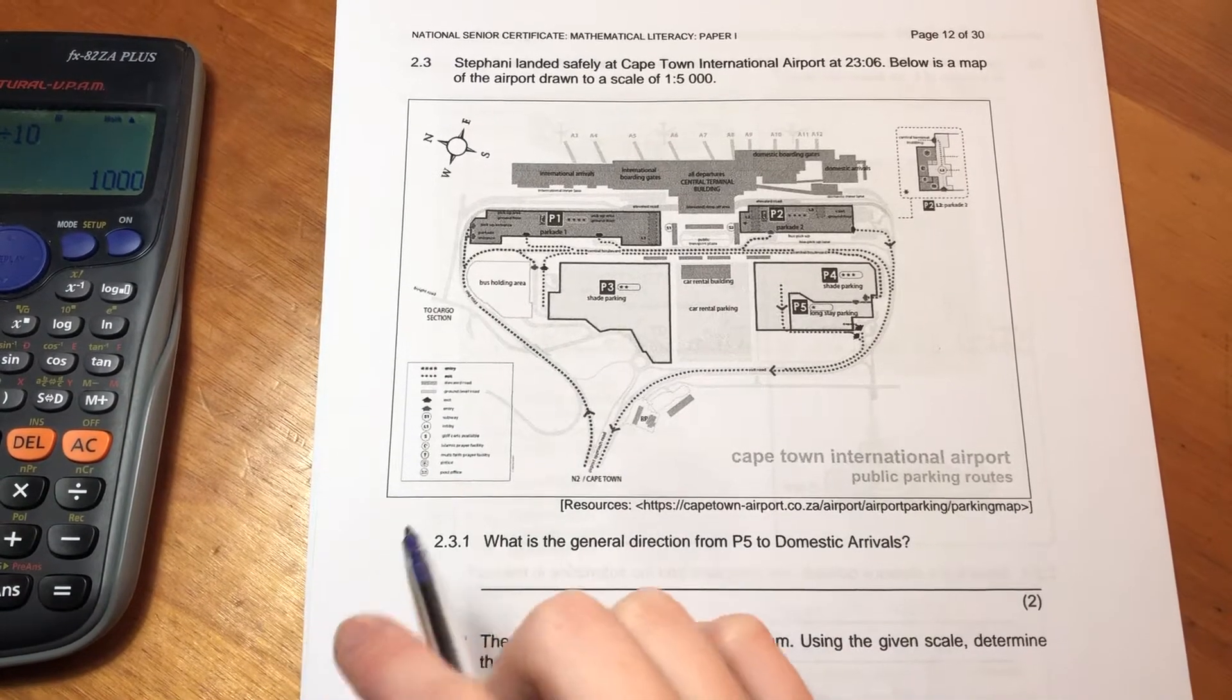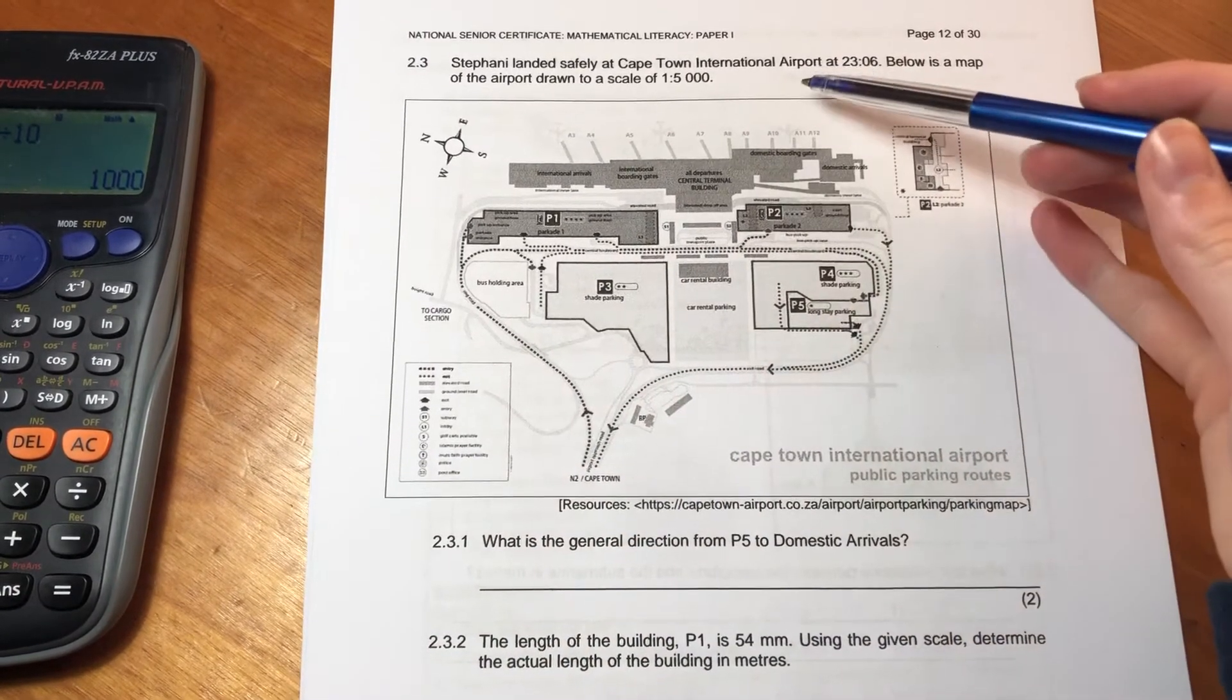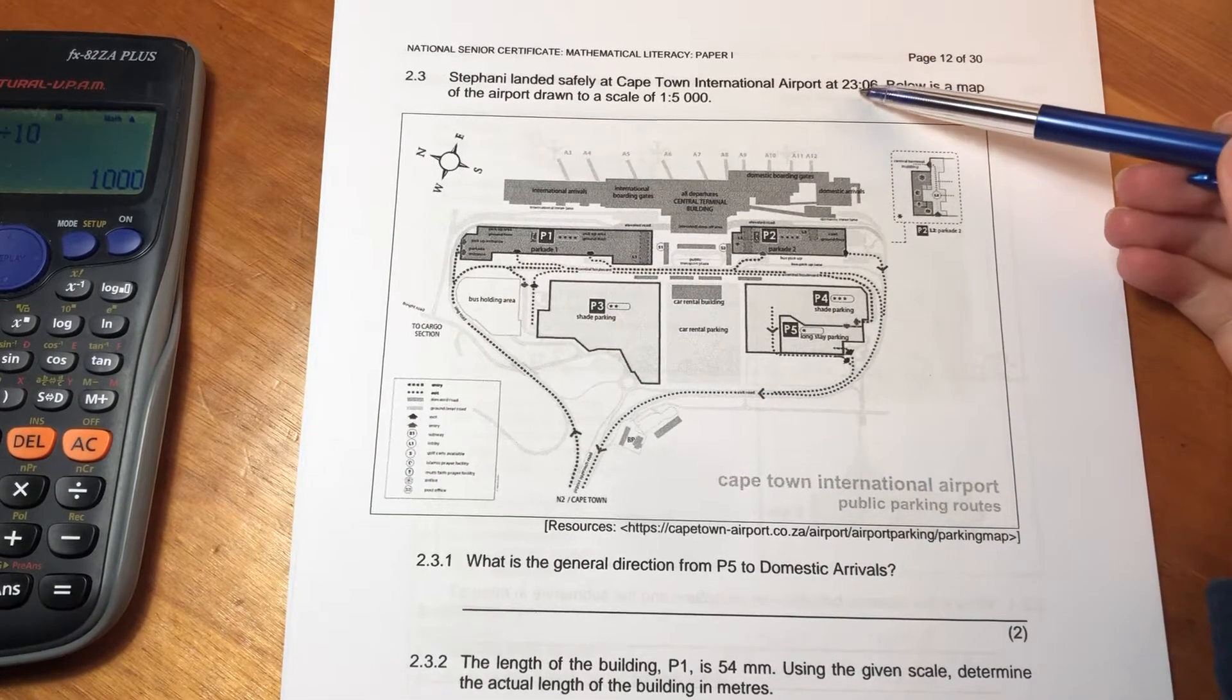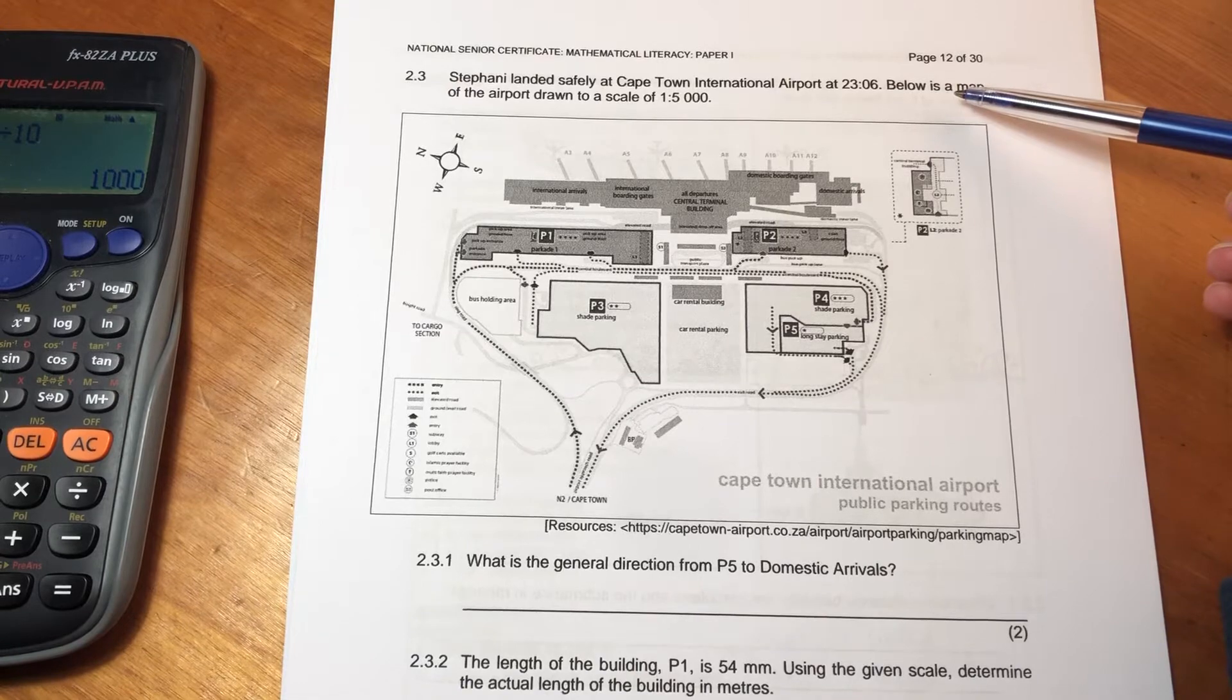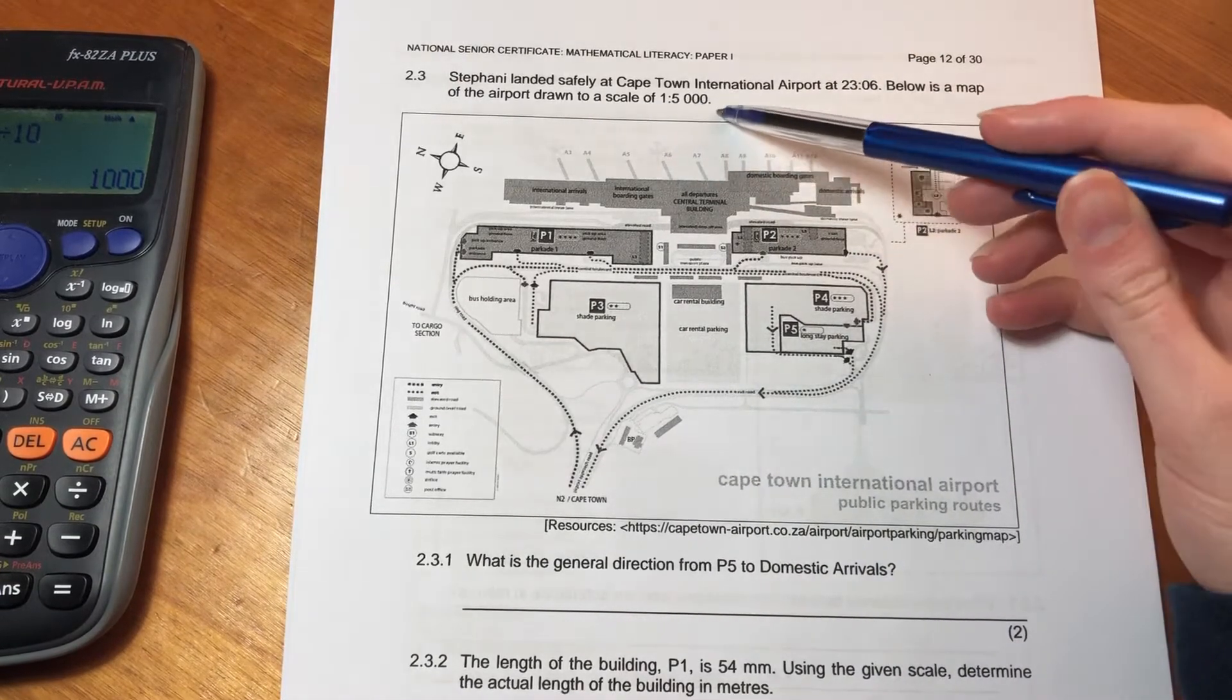Okay, we're now on 2.3. So it says Stephanie landed safely at Cape Town International Airport at 2306. Below is a map of the airport drawn to a scale of 1 to 5000.